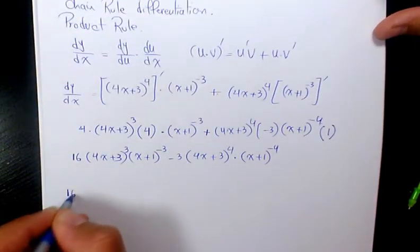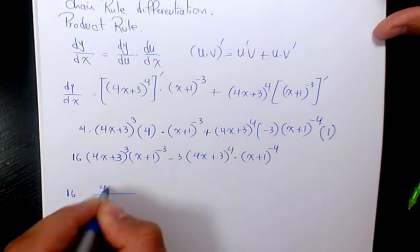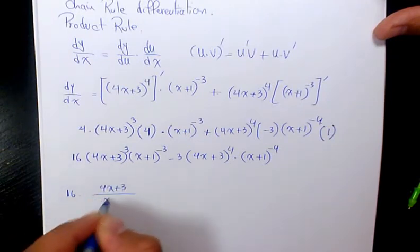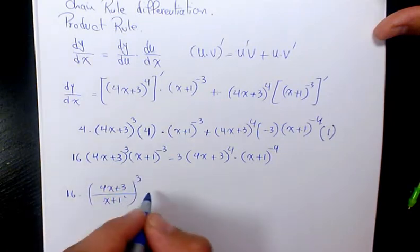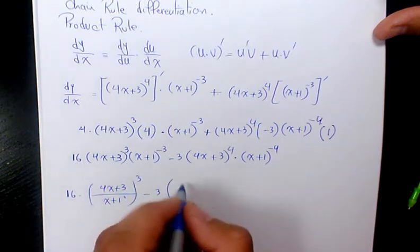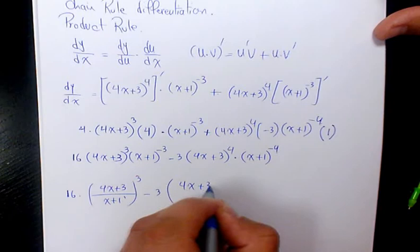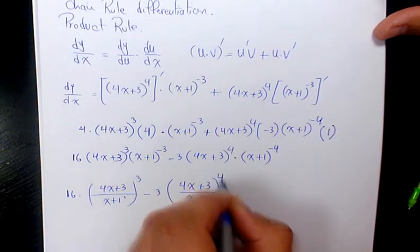So we have 16 times (4x + 3)^3 over (x + 1)^3 minus 3 times (4x + 3)^4 over (x + 1)^4.